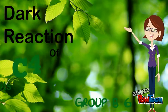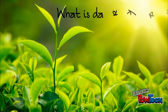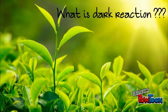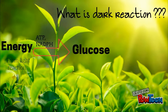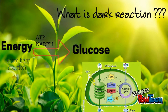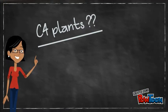Dark reaction of C4 plants. What is dark reaction? Dark reaction is producing glucose by using energy from light reaction, using ATP and NADPH. Dark reaction takes place in the internal compartment of the chloroplast.